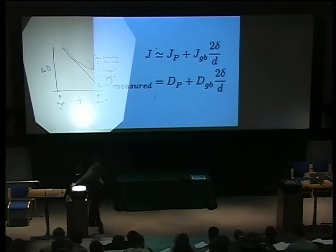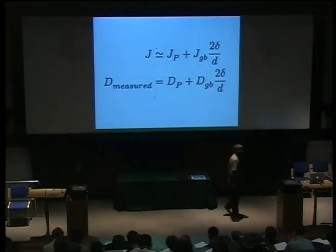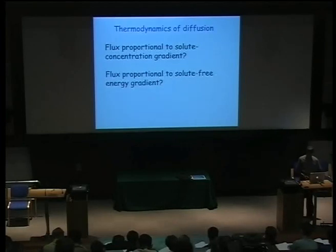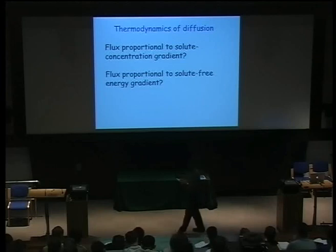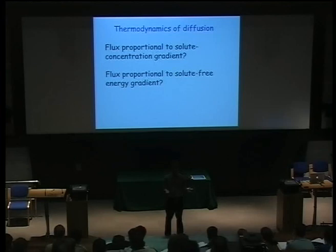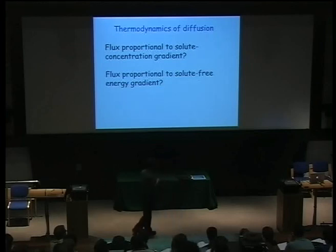Now I'm going to change topic and move on to the thermodynamics of diffusion, revising some material from Part 1A. Fick's laws are empirical — the basic assumption is that flux is proportional to concentration gradient. But that doesn't fully make sense, because it's really free energy gradients that determine processes. When a system reaches equilibrium, it stops changing once the free energy is uniform everywhere. So we should think about a flux being proportional to the free energy gradient of a solute.